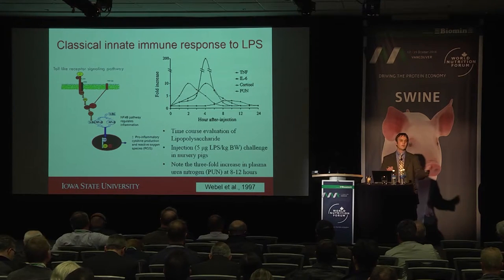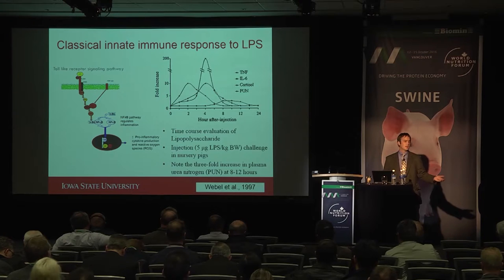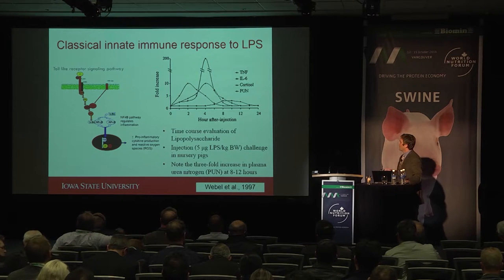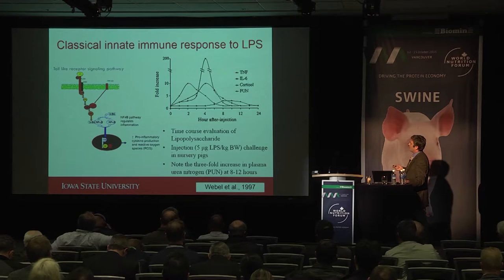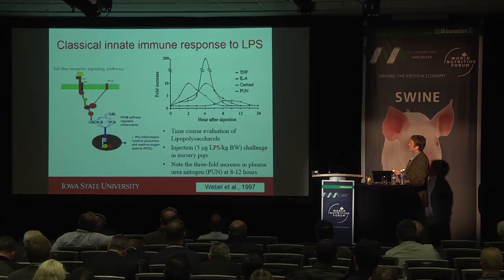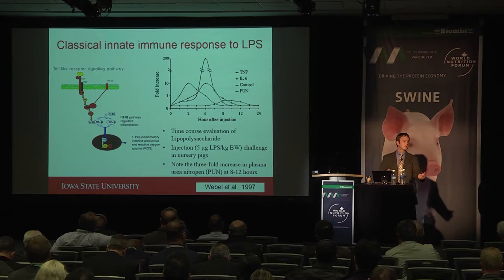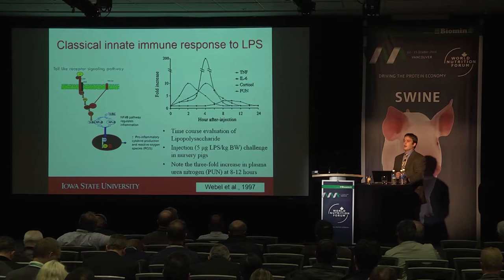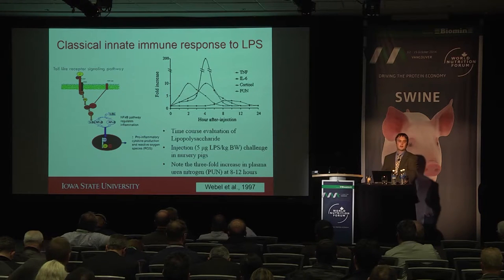LPS binds to toll-like receptor 4, gets internalized, and initiates a cascade leading to phosphorylation and liberation of the repressor IκB, allowing NF-κB — a major master transcription factor — to translocate to the nucleus and bind to promoter regions of genes to initiate a febrile and pro-inflammatory response. By about six to eight hours the pig has somewhat resolved the challenge, and at 24 hours you get about a 50% reduction in response due to tolerance.